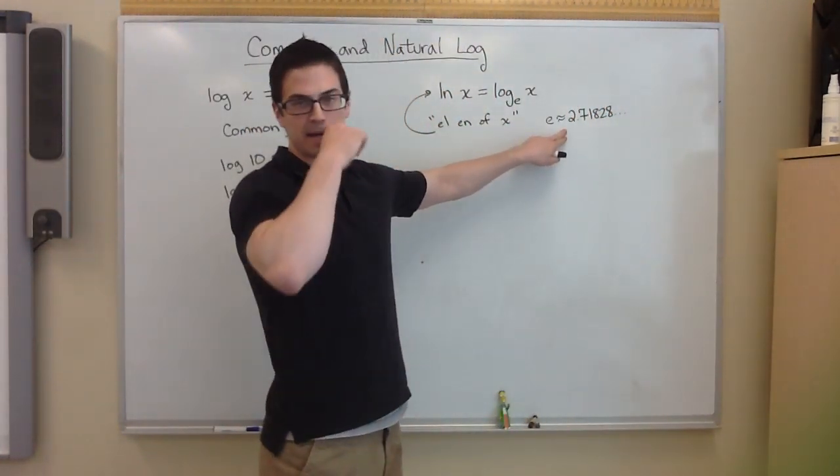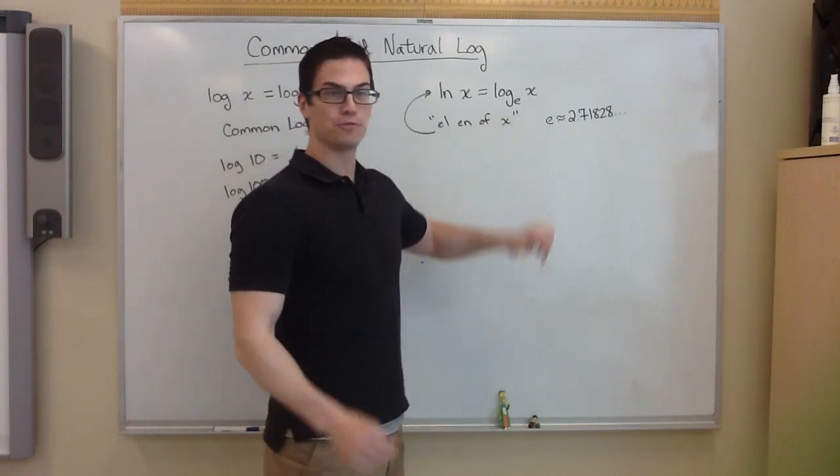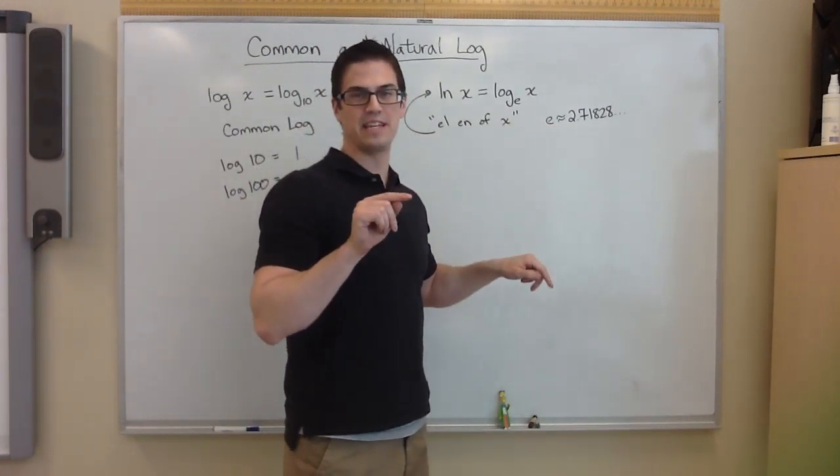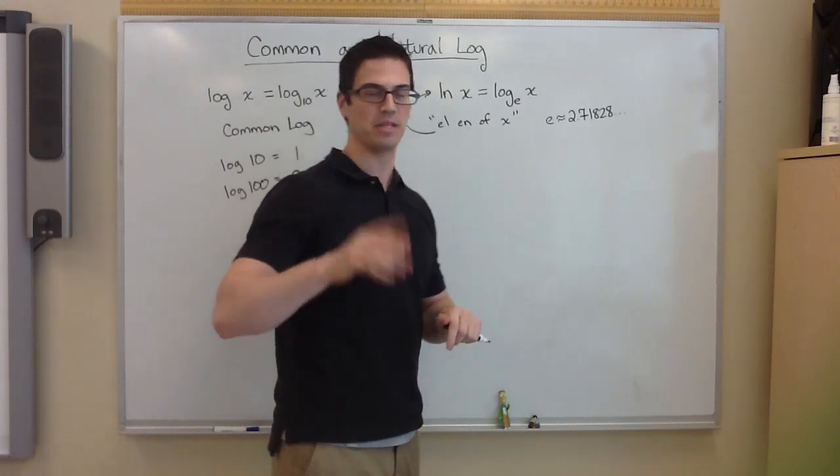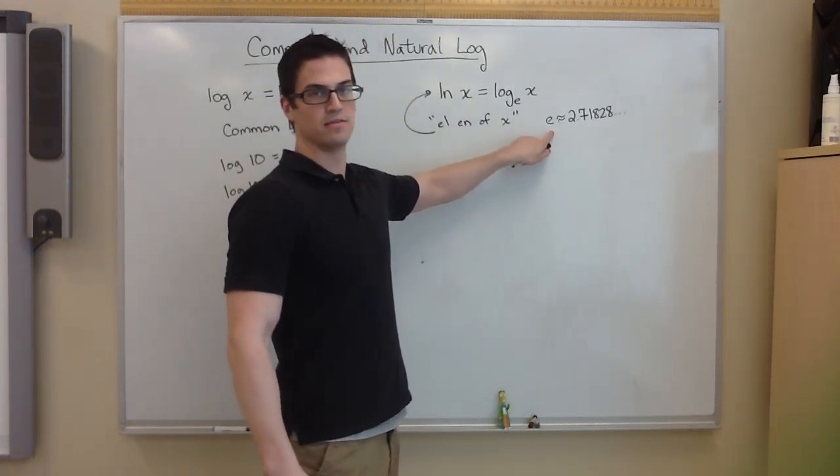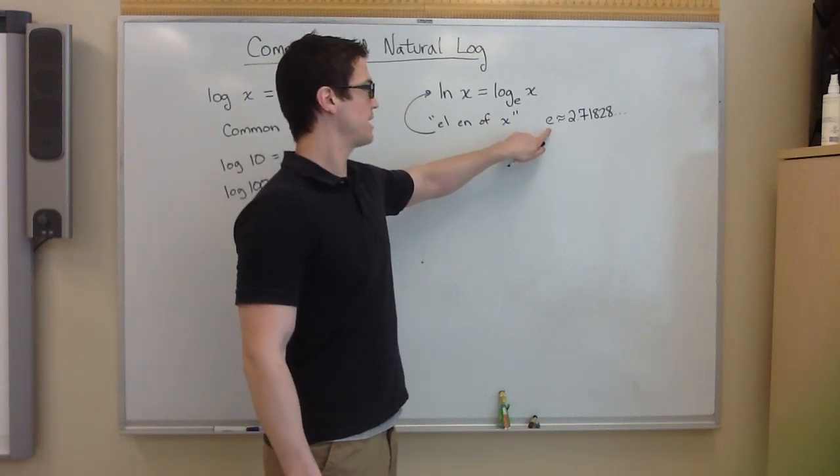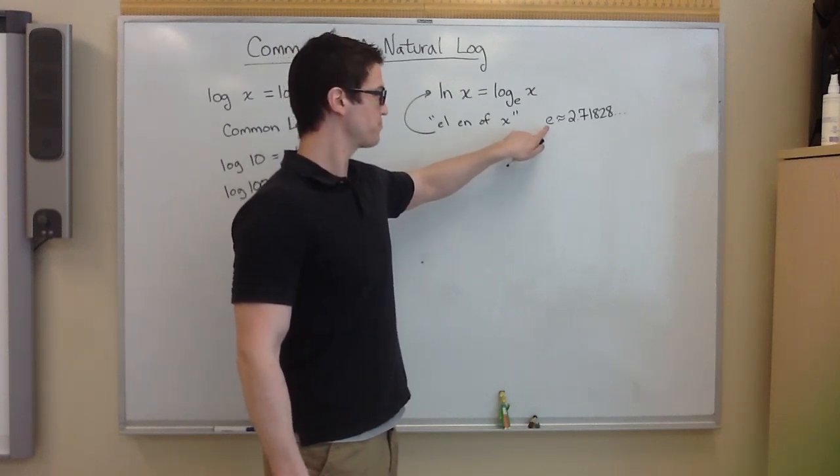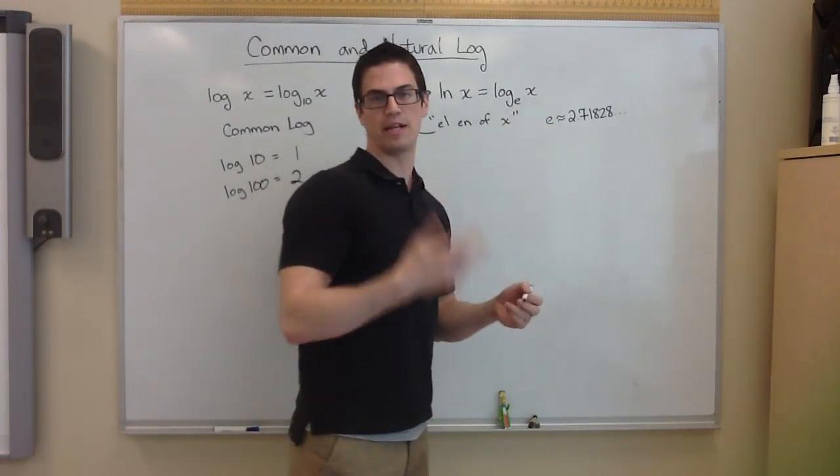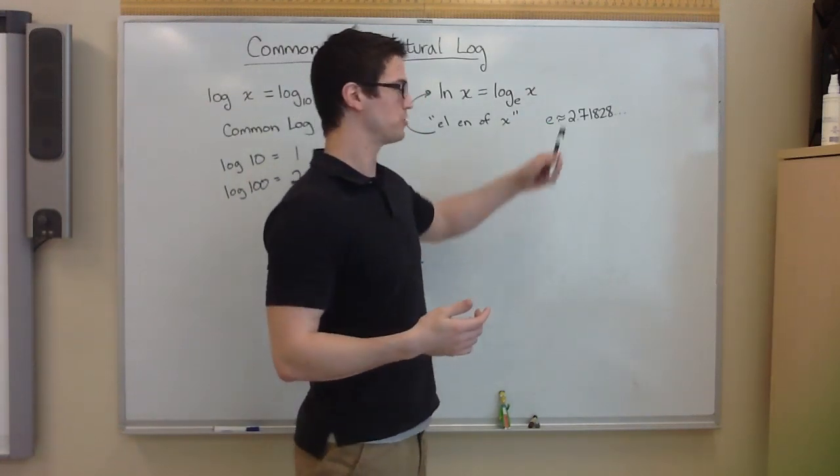It's also called Euler's number. So if you ever hear about that, that's what that e is. You've probably seen it on your calculator. This is a lowercase e. There is that capital E, but that's for something different. This is the natural log, the natural base. If you ever want to see the value of it on a calculator, just write e to the 1 power and hit enter.